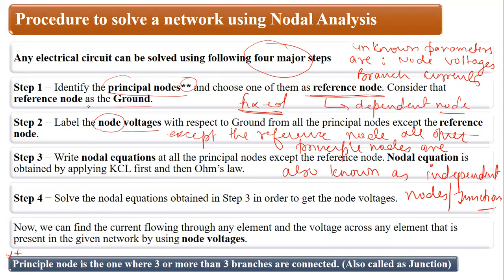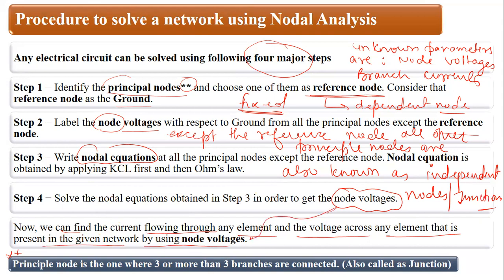After applying KCL, we apply Ohm's law to get the V/R equivalent of that current equation. In step four, we solve these nodal equations to get the node voltages, which are the unknown parameters. By using these node voltages, we can find the current flowing through any element and the voltage across any element present in the given network.